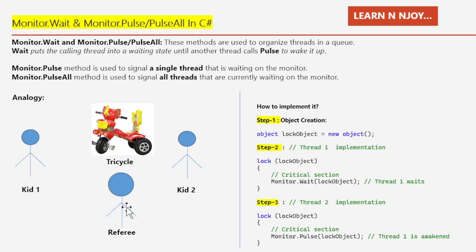Monitor.Wait and Monitor.Pulse are commands the referee uses to make sure the kids take turns. When one kid is riding, the referee tells the other to take a break and sit down until the referee says they can ride again — that's Monitor.Wait. When it's the first kid's turn again, the referee tells them — that's Monitor.Pulse. In simple terms, Monitor.Wait is a pause button and Monitor.Pulse is pressing play.